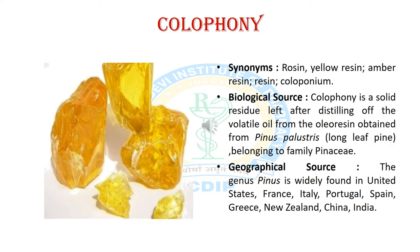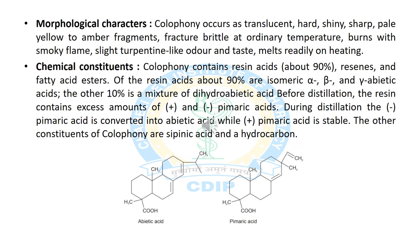Now we will discuss the last resin-containing crude drug, and it is Colophony. The synonyms are yellow resin, amber resin and Colophonium. The biological source: it is the solid residue obtained by distillation of volatile oil from Pinus palustris, belonging to the Pinaceae family. The geographical source: it is found in the United States, France, Italy, Spain, China and India. Morphologically, Colophony consists of hard, shiny, sharp, pale yellow color fragments with a terpene-like odor and taste.